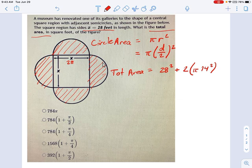28 squared is 784. And 14 squared is 196 times 2, means this other one is 392 pi.